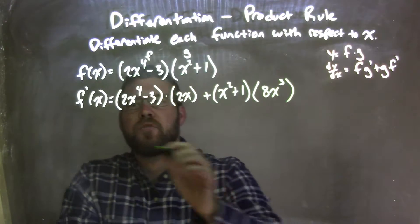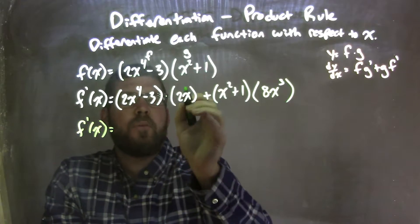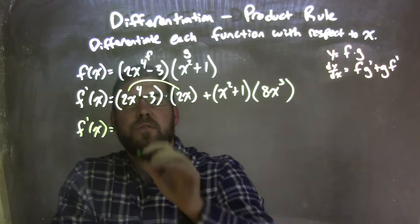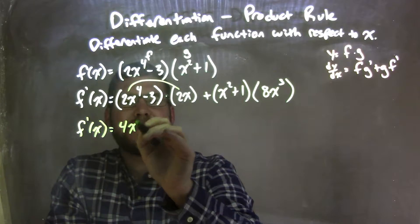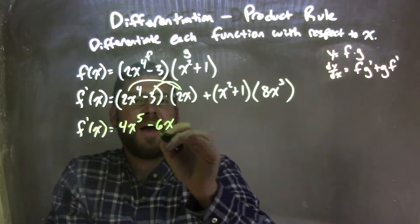Now I need to distribute. So when I distribute across here, f prime of x here, let's go multiply the 2x times the 2x to the 4th, which gives me 4x to the 5th. 2x times a negative 3 is a negative 6x.